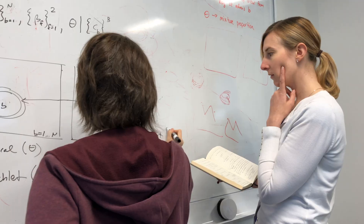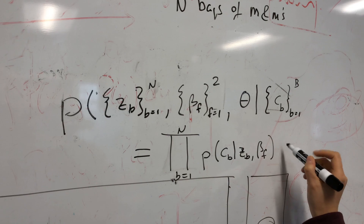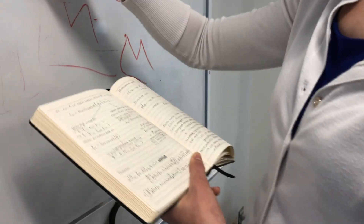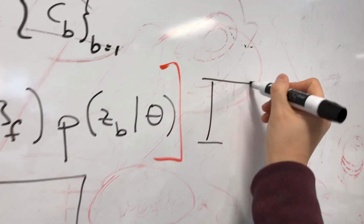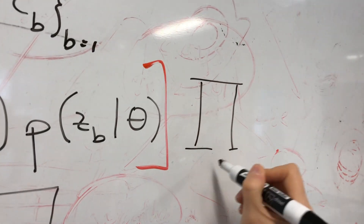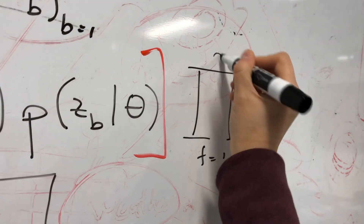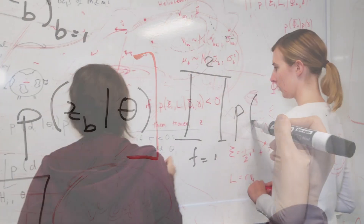If you assume some sort of model for the gravitational potential of the galaxy, then these globular cluster orbits can tell you how much mass is creating that gravitational potential, and that in turn tells you how much mass is in the galaxy.